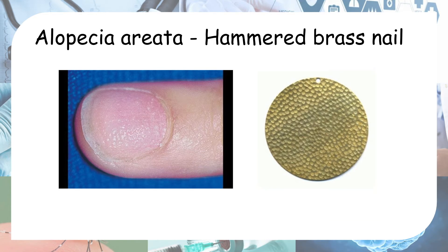You may also see nail pitting, but this nail pitting is finer than what you see in psoriasis and is known as hammered brass nail. It is an indicator of poor prognosis in alopecia areata.